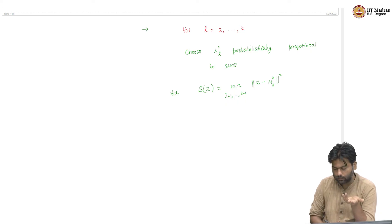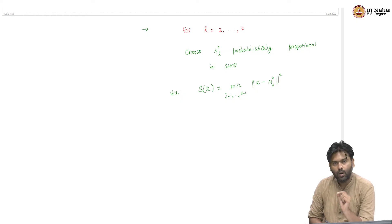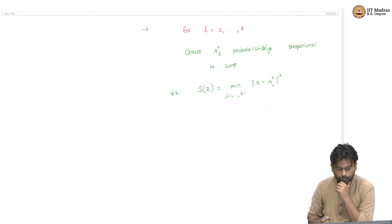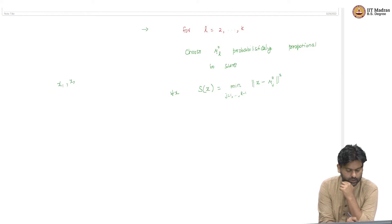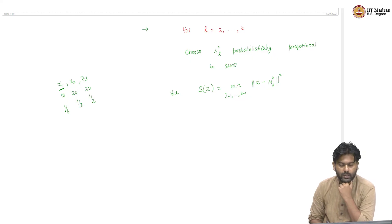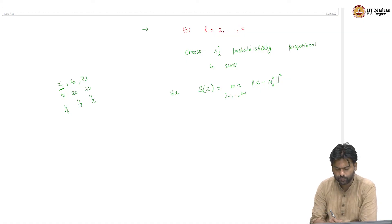You compute this score for all x in the data set, normalize these scores over all data points to form a probability distribution, and then probabilistically sample the next mean from this distribution. So if x₁, x₂, x₃ have scores 10, 20, 30, then x₁ is chosen with probability 1/6, x₂ with probability 1/3, and x₃ with probability 1/2. This is the k-means++ way of doing initialization.